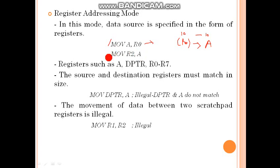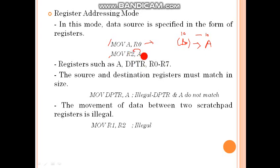The second instruction is MOV R2, A. Its meaning is the content of the accumulator will be moved to R2. If A mein 10H hai — for example, pahili instruction se R0 ka 10H, A mein chala gaya, aur phir doosri instruction se A ka content R2 mein chala gaya. So after both instructions execute, R2 ke content 10H rahenge, because A ke content 10H the.